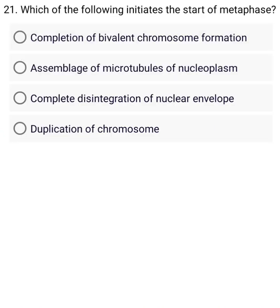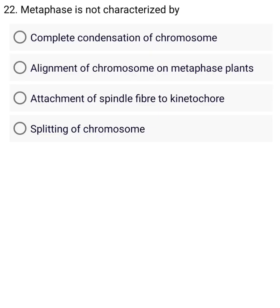Cells at the end of prophase when viewed under the microscope — Which of the following initiates the start of metaphase? A. Completion of bivalent chromosome formation. B. Assemblage of microtubules — Metaphase is not characterized by A. Complete condensation of chromosomes. B. Alignment of chromosomes on the metaphase plate.